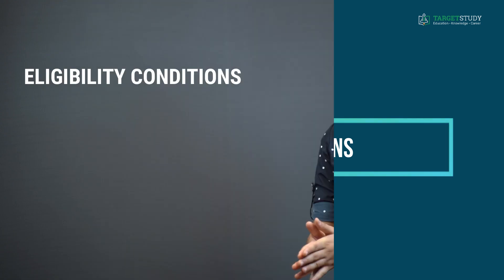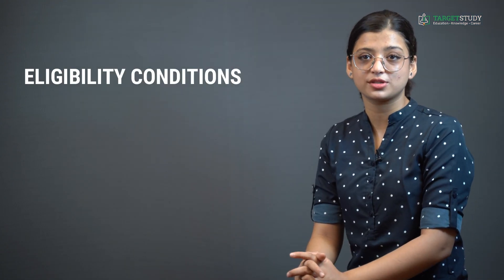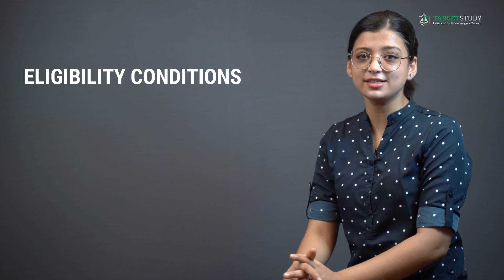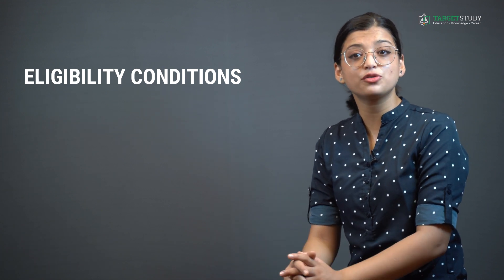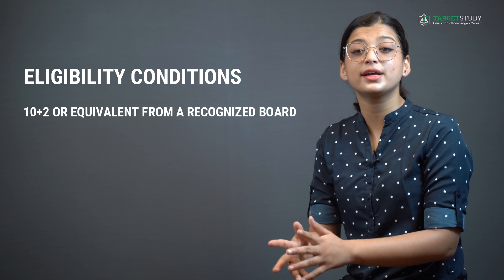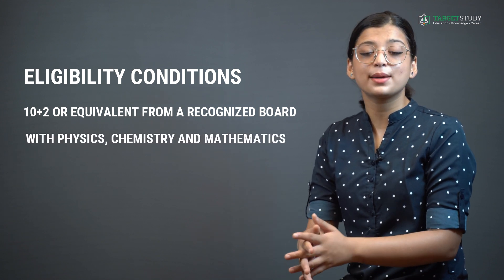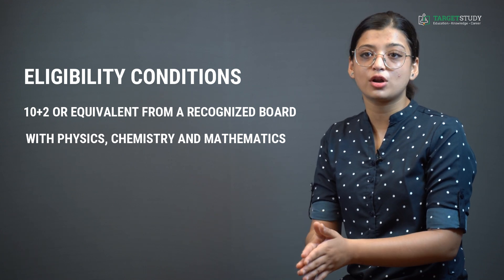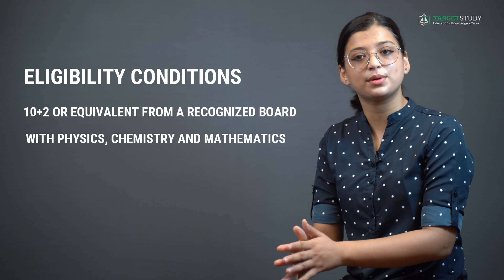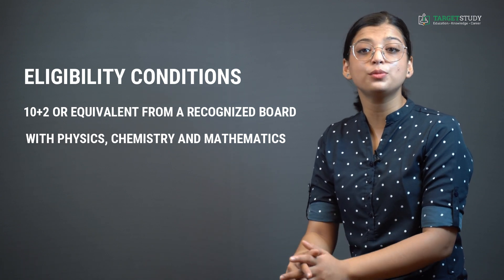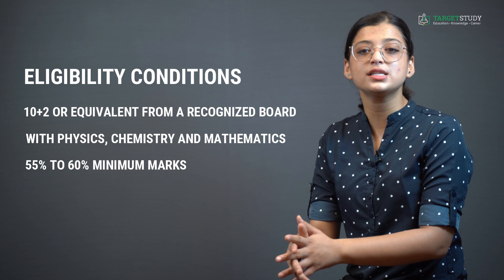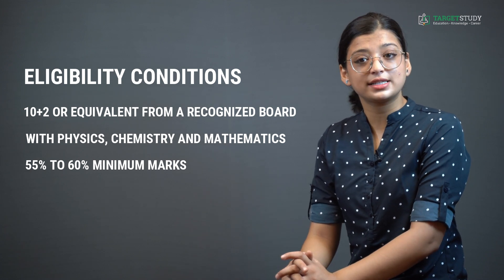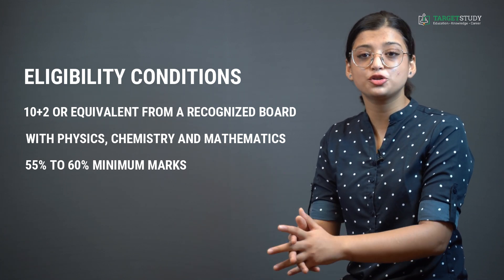Now, when you are aware of the course, you would like to know the eligibility conditions required to join B.Sc Computer Science course. As far as educational qualification is concerned, you must have passed higher secondary that is class 12th or equivalent from a recognized board with physics, chemistry and mathematics as your main subjects. Here, you have to keep in mind that some reputed colleges may also demand certain minimum percentage of marks in 12th class and that could be anywhere between 55 to 60%. However, the eligibility criteria might differ a bit from college to college.